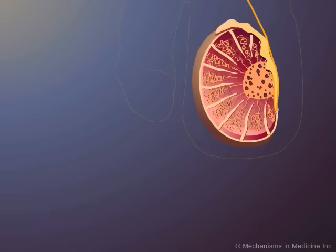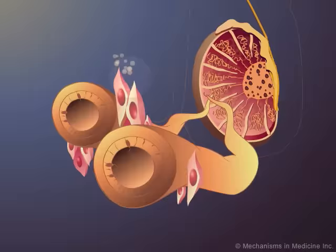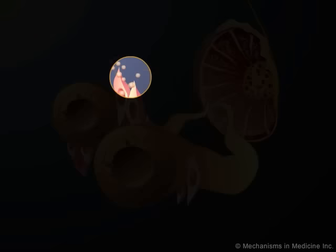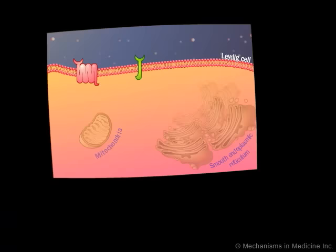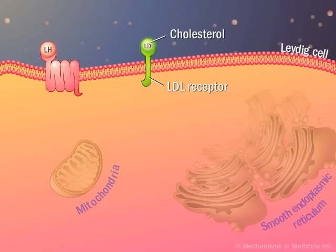LH binds the LH receptor on the Leydig cells of the testes. Binding initiates a cascade of events, which include the conversion of cholesterol — depicted as LDL here — to pregnenolone, followed by a series of reactions which convert pregnenolone to testosterone.